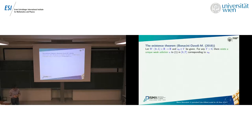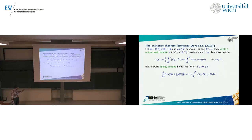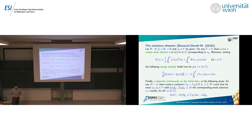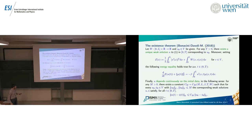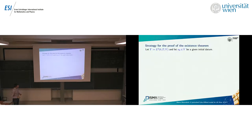The existence theorem contains three statements. First, given an initial datum, for any given time there exists a unique weak solution corresponding to that datum u₀. Second, the energy — the time derivative of kinetic energy plus potential energy — enjoys an energy equality written here. Third, there is a continuous dependence on initial data: fix a positive M, then there exists a constant C_M such that if any two initial data lie in the ball of radius M, the corresponding weak solutions satisfy a stability estimate in terms of C_M and the distance of the initial data.